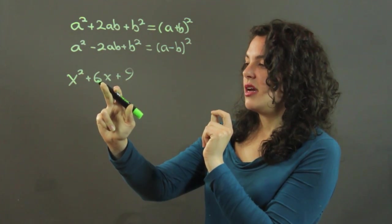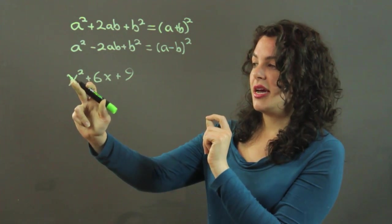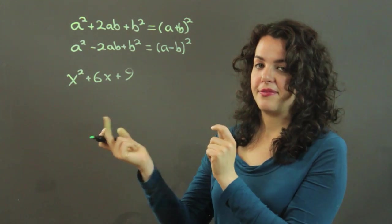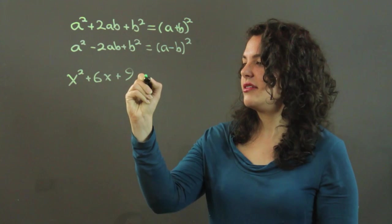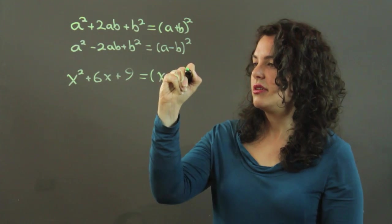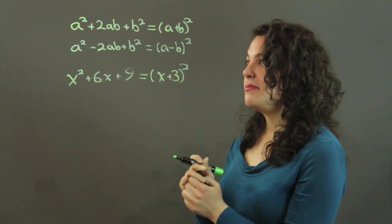And when I look at this, I do have 2 times 3 times x, I have 2 times my b and my a. So once you get the hang of this, they're very easy to see. And just quickly throw that up there, I factor it immediately.